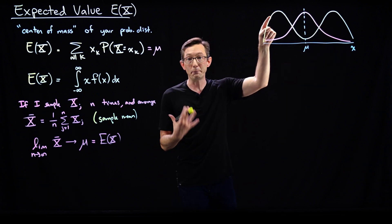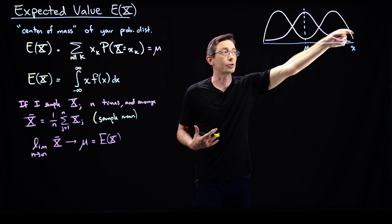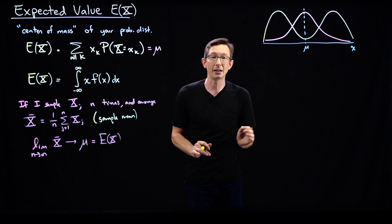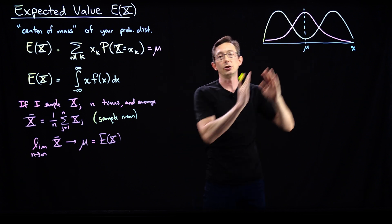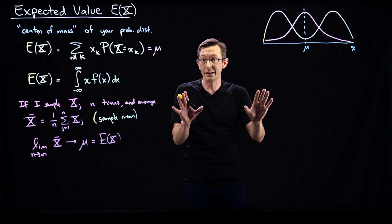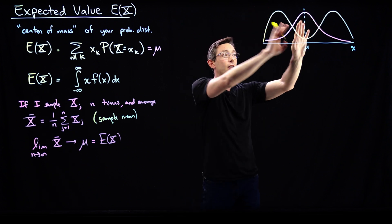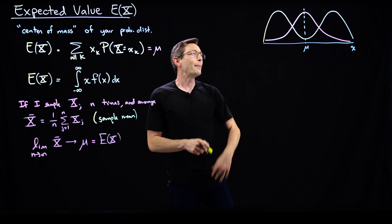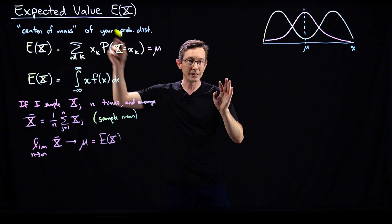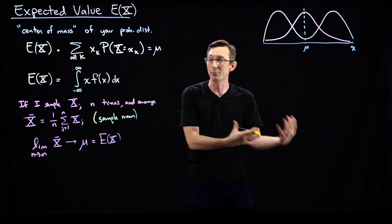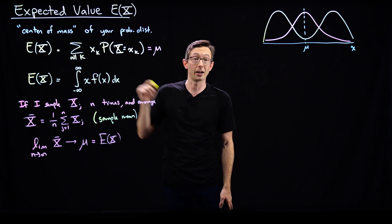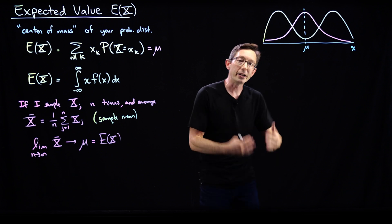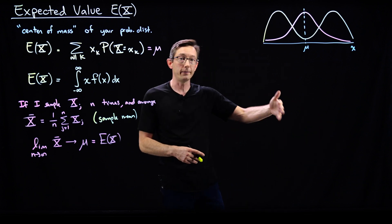Weird things can happen with oddly shaped distributions. I need other parameters to define and distinguish these two distributions. One of those numbers is going to be the standard deviation. The expected value is kind of the average; the standard deviation or variance is going to measure how much spread my distribution has. The yellow one clearly has more spread than the pink curve, and that would distinguish these two. This expected value is called your first moment, kind of like a moment of inertia. The variance and standard deviation are related to the second moment, and there are higher order moments — third, fourth, fifth, and so on.